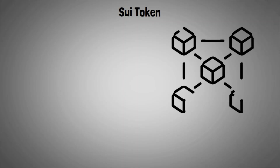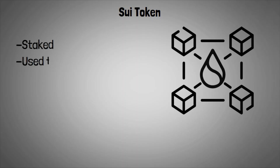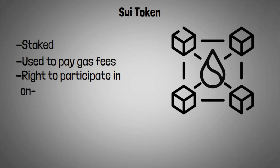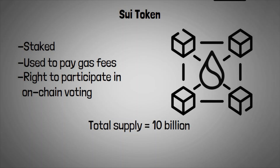Let's round up by looking into the Sway token. The SUI token is the Sway blockchain's native asset. The token can be staked to take part in the proof-of-stake consensus, can be used to pay gas fees when carrying out transactions and other operations, and also gives its holder a right to participate in on-chain voting. The total supply of the token is capped at 10 billion.